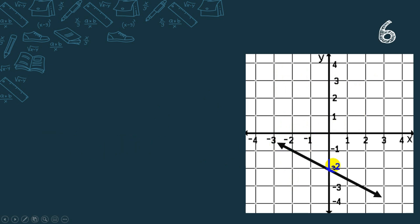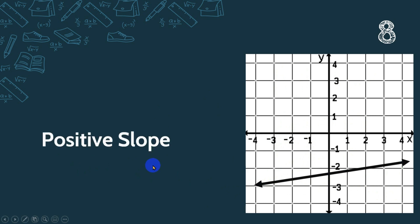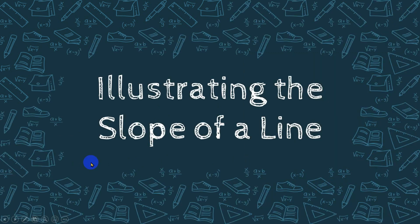Number six: downward from left to right, so that is negative slope. Number seven: horizontal line, that is zero slope. Number eight: upward from left to right, we have positive slope.